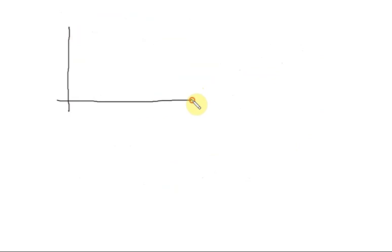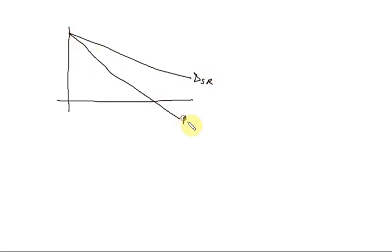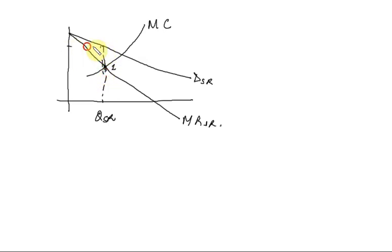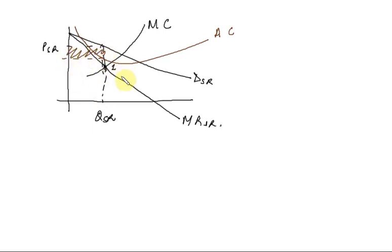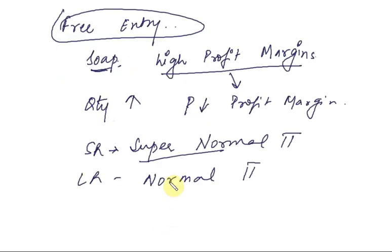Because monopolistic firms have a downward sloping demand curve, they have some amount of monopoly power, though not too much. In the short run we have a demand curve and an MR curve. We also have an MC curve. Equilibrium occurs where MR equals MC, so we produce quantity Q_SR and charge price P_SR in the short run. The cost curve position means the firm is making super normal profit in the short run — that area represents super normal profit.